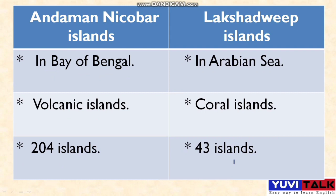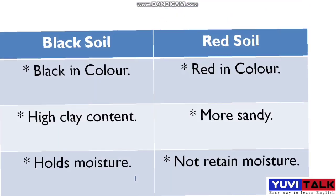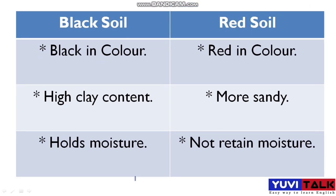Now let's move to the next question. What is the difference between Black Soil and Red Soil? The first difference is that Black Soil is black in color and Red Soil is red in color. The second difference is that Black Soil has a high clay content, while Red Soil is more sandy.